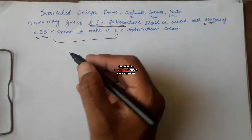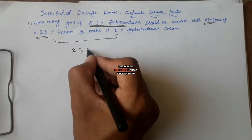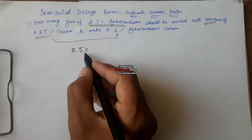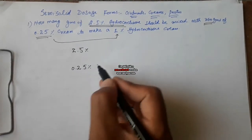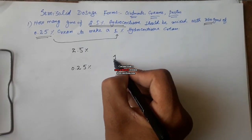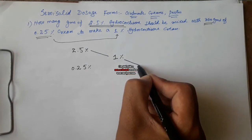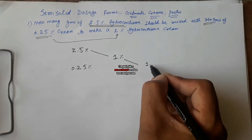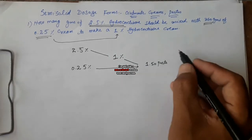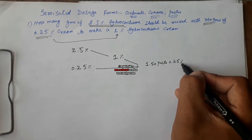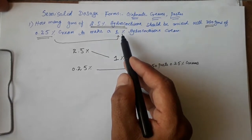For this purpose we will use the alligation technique. We write 2.5% — this hydrocortisone will be mixed with the 0.25% hydrocortisone cream to produce 1% hydrocortisone cream. If we subtract 1 from 2.5, we will get 1.5. So 1.5 parts are from the 0.25% cream that must be present in the final dilution to make 1% hydrocortisone cream.